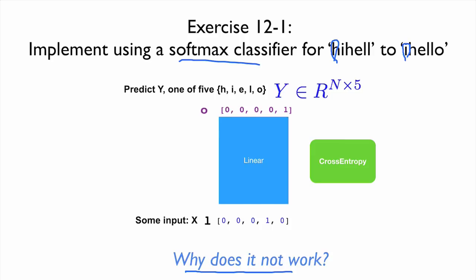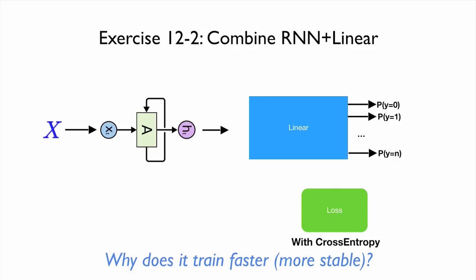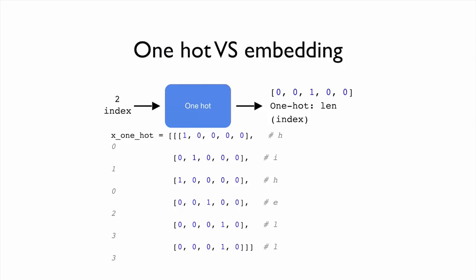One reason the softmax alone doesn't work well is that each softmax doesn't see the previous state — it has no memory of previous states. So predicting the next letter based only on the current state is difficult. For the next exercise, combine RNN with a softmax classifier by adding a fully connected layer on top of the RNN. This is a very typical model and it will train a little bit faster and more stably.